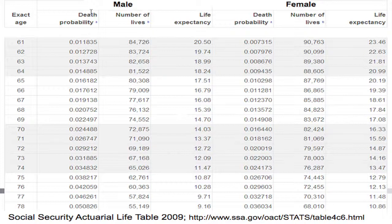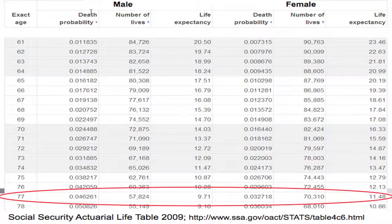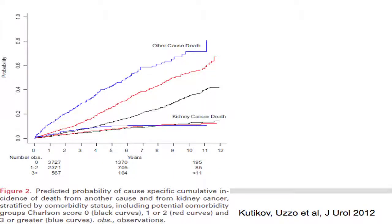What about her risk of dying of other causes? Using the Social Security actuarial life table, for a 77-year-old female, her life expectancy is about 11.5 years. The likelihood of dying of other causes is directly related to her comorbidity status: for each increase in Charlson comorbidity score, there is a corresponding increase in risk of death from other causes, whereas kidney cancer death is not related to comorbidity.